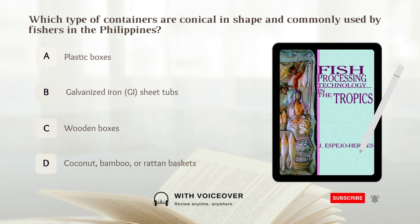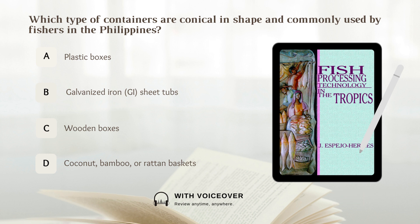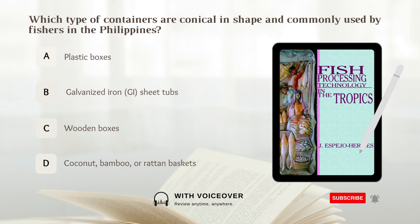Which type of containers are conical in shape and commonly used by fishers in the Philippines? Options: A. Plastic boxes. B. Galvanized iron sheet tubs. C. Wooden boxes. D. Coconut, bamboo, or rattan baskets. Answer: B. Galvanized iron sheet tubs, or banyera.